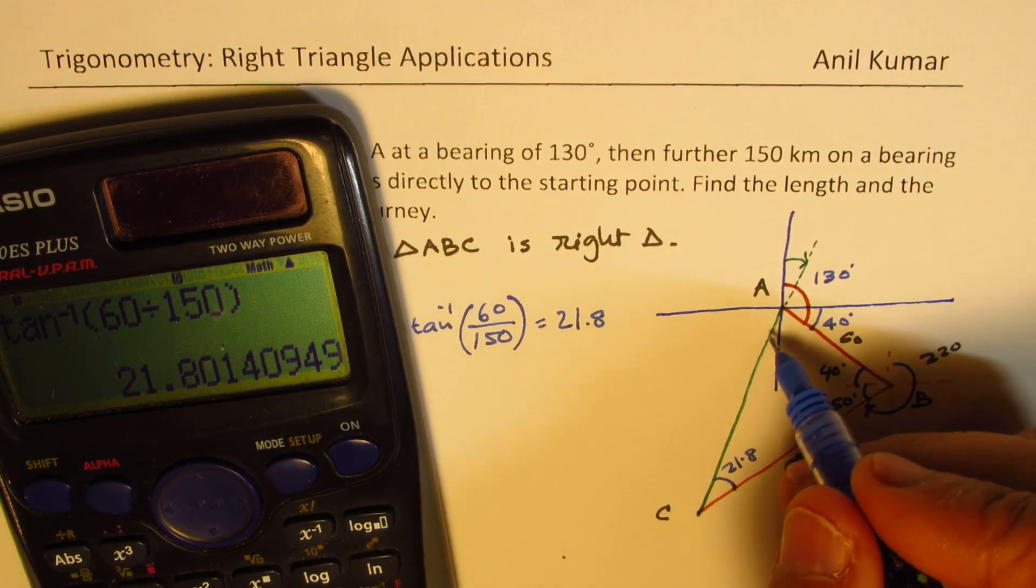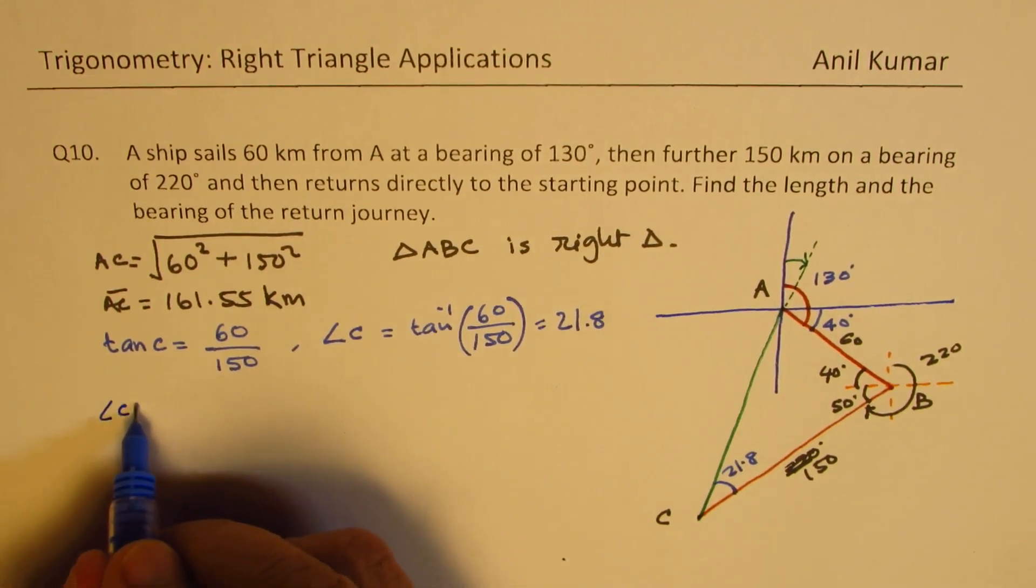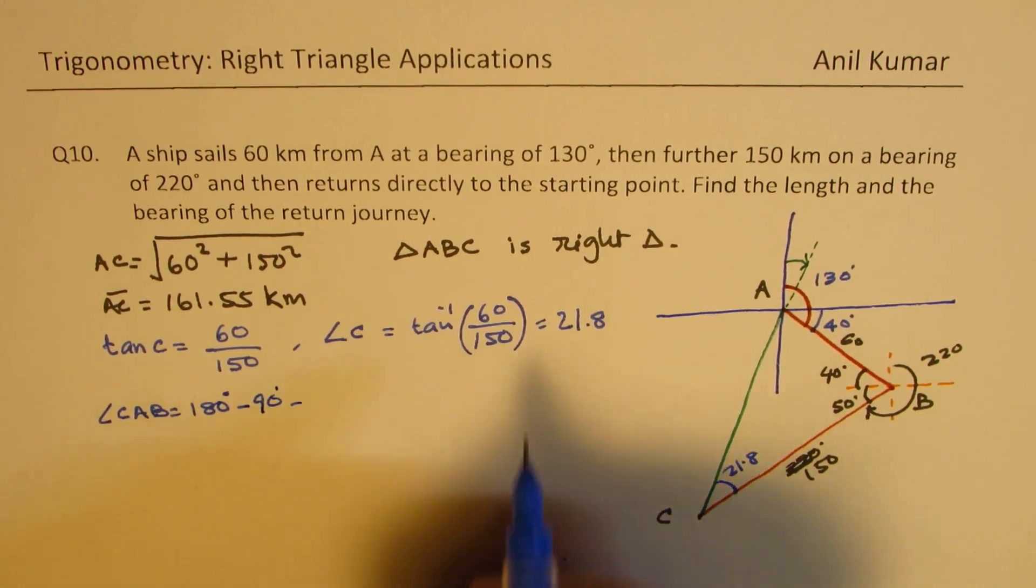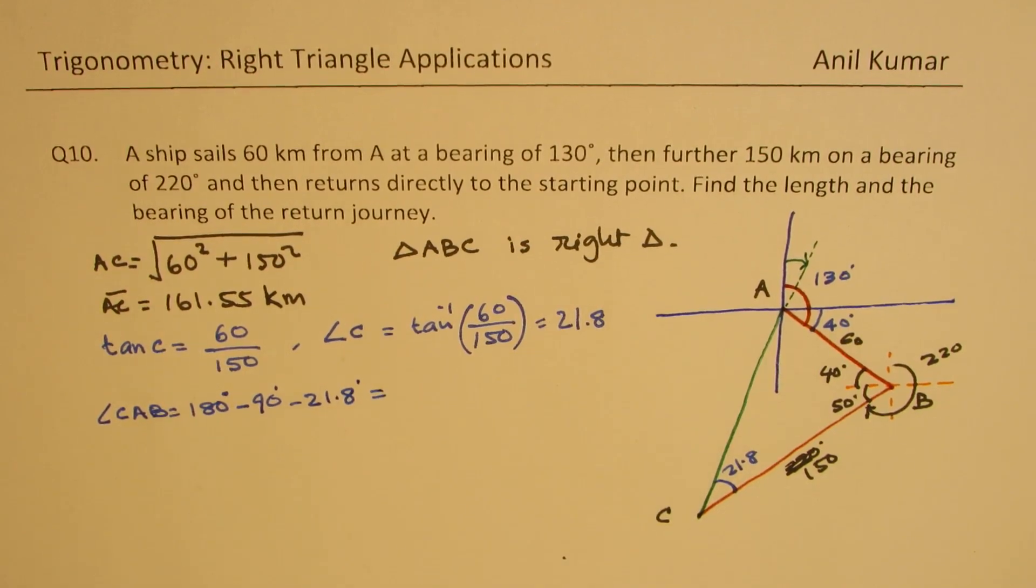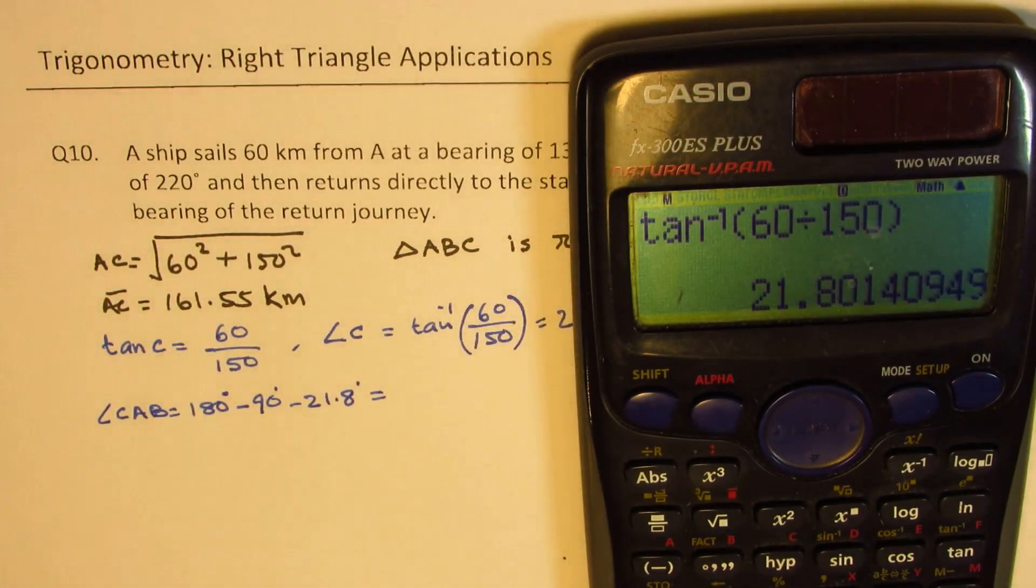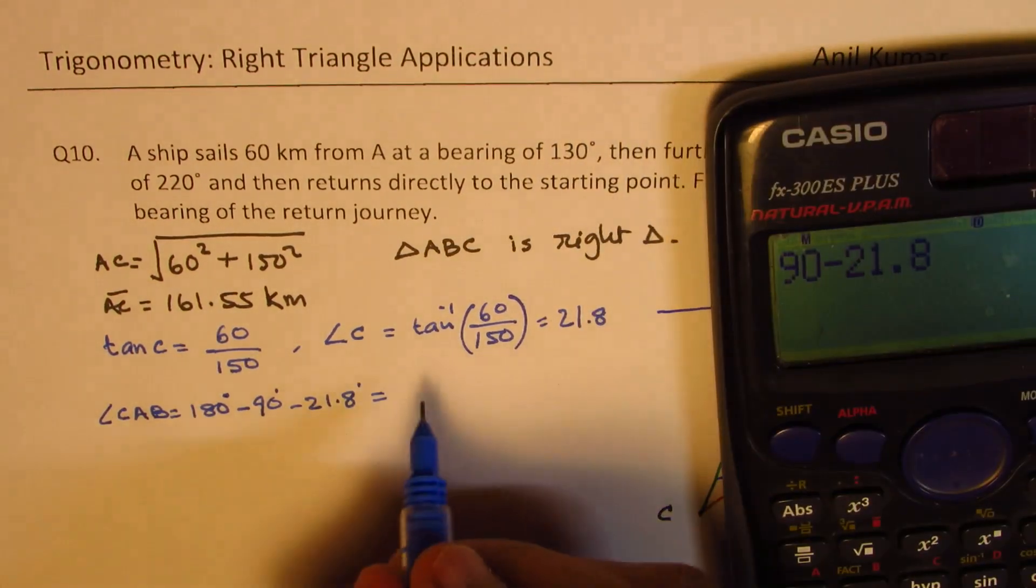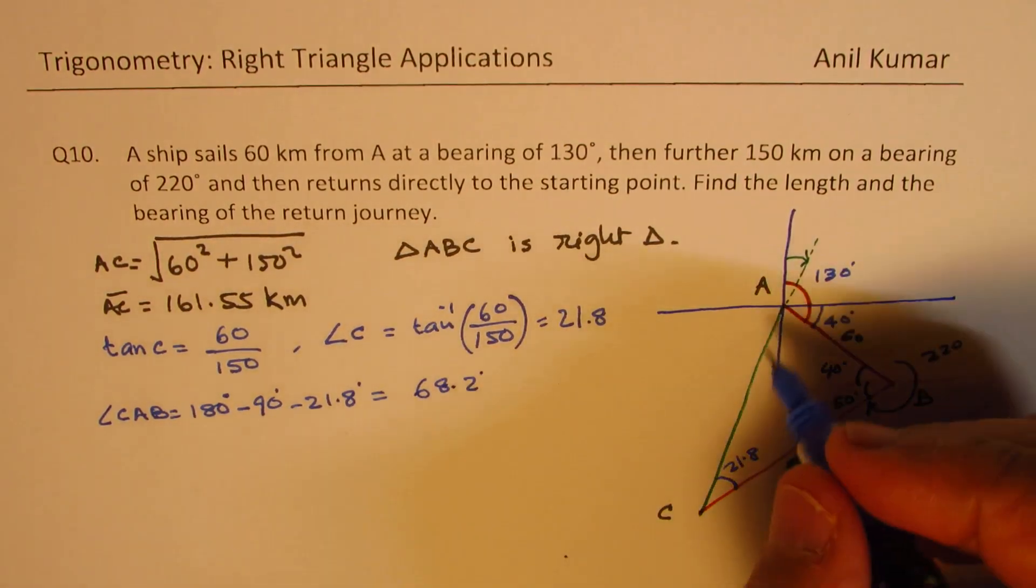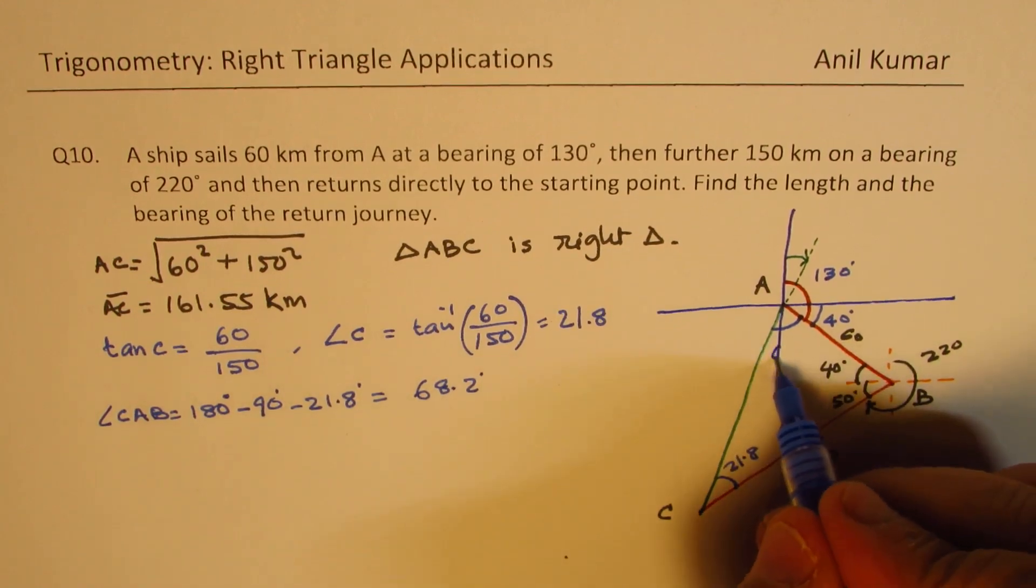Now we can find the third angle, which is angle CAB. So angle CAB should be 180 degrees minus 90 degrees minus this 21.8 degrees. So let's do 90 minus 21.8. So in decimals it is 68.2 degrees. So this total angle is 68.2 degrees.